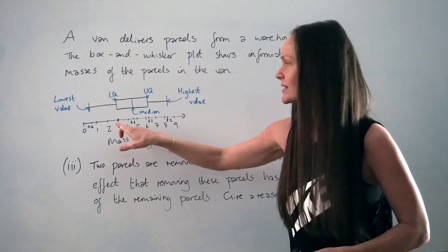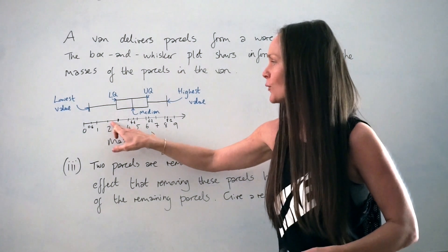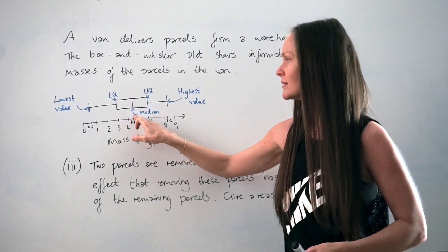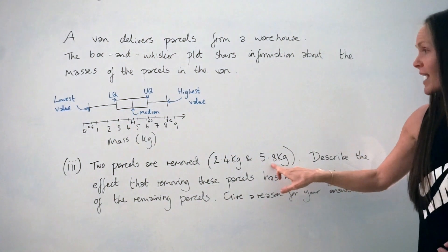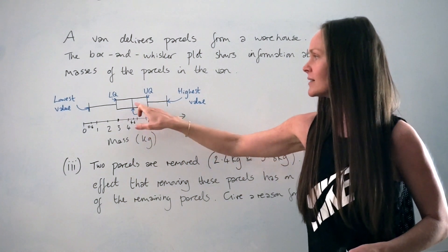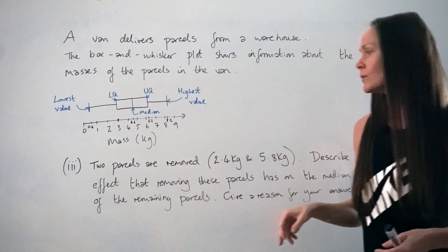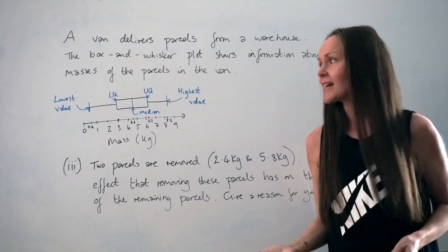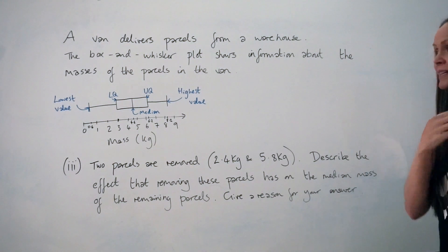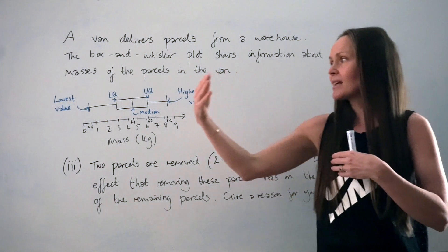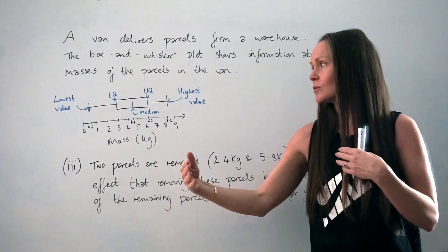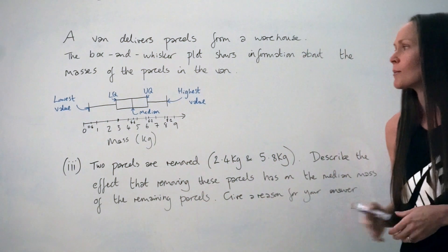Let's take a look to see where these two masses lie on the diagram. 2.4 kilograms is approximately here. Hopefully you can see that this mass is smaller than the median. 5.8 kilograms is approximately here, and this time the mass is greater than the median. So that means the median will actually stay the same. You would write that the median stays the same. The reason would just be that because we're taking one parcel that's smaller than the median and one parcel that's greater than the median.